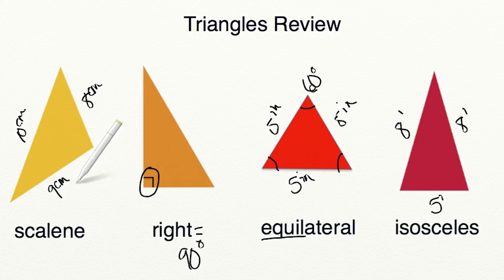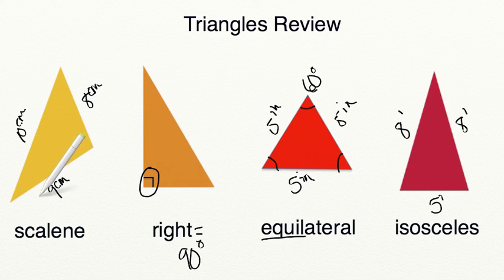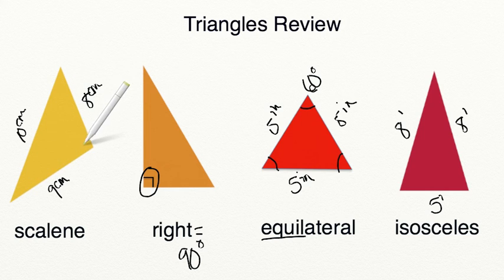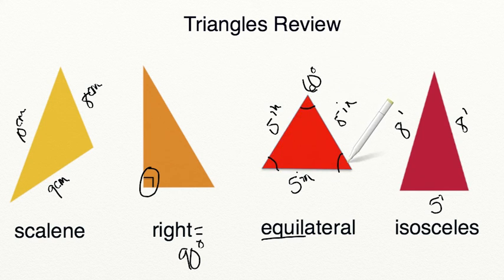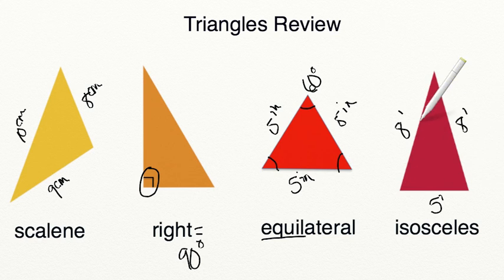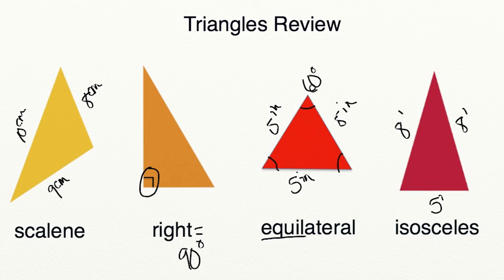A scalene triangle doesn't have any sides with the same length and doesn't have any angles with the same measurement. An equilateral triangle has all three sides with the same length and all three angles with the same measurement. An isosceles triangle has two sides with the same length and two angles with the same measurement.